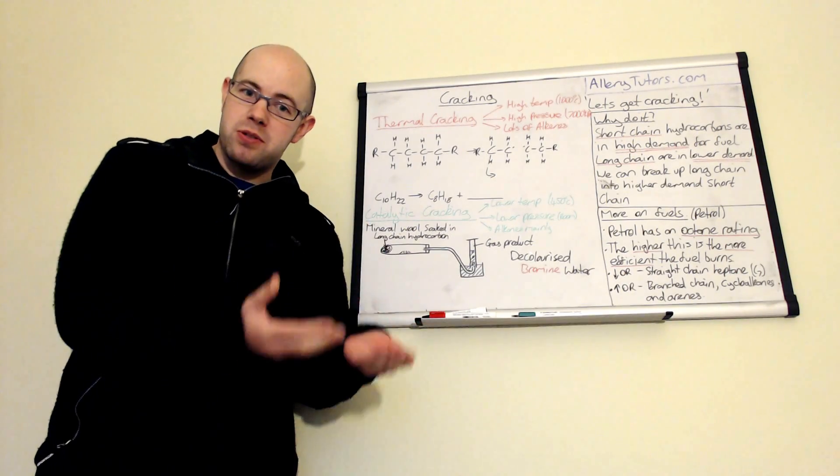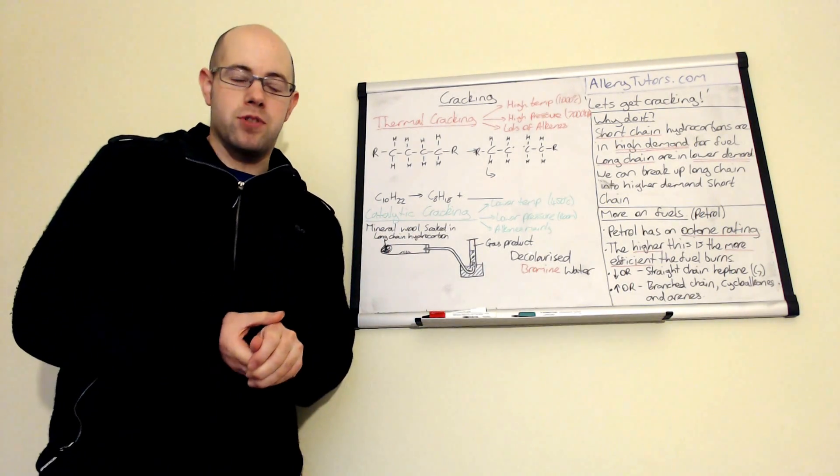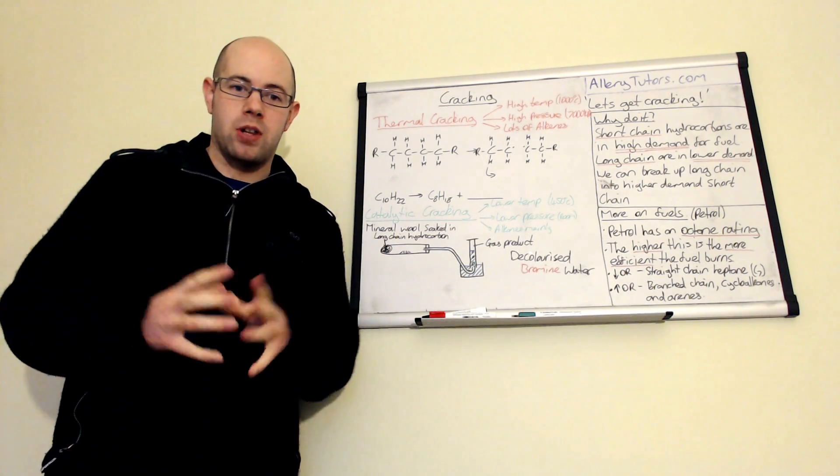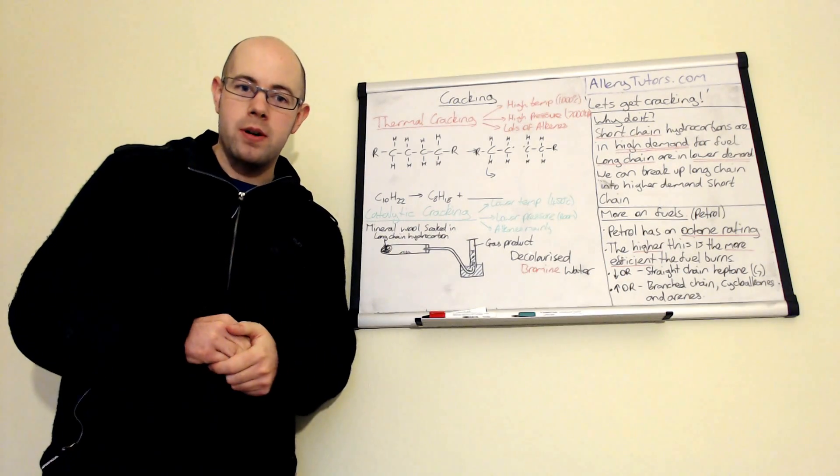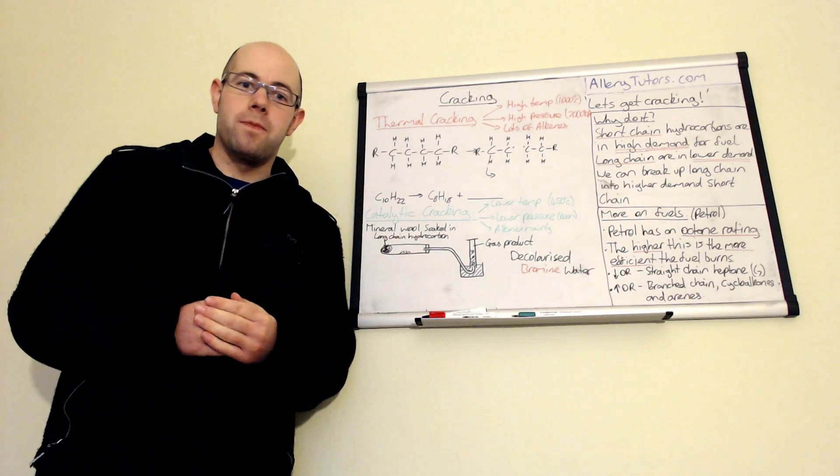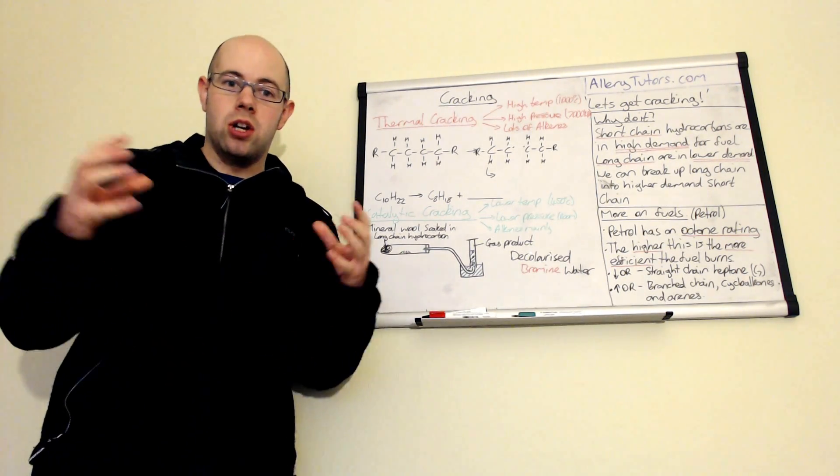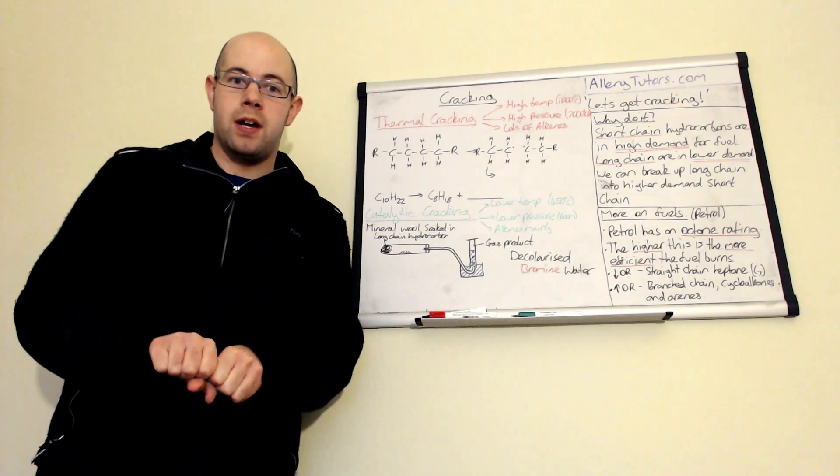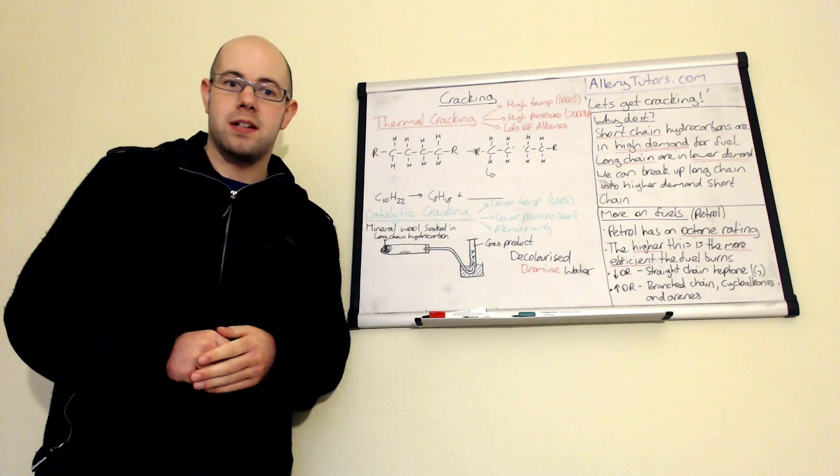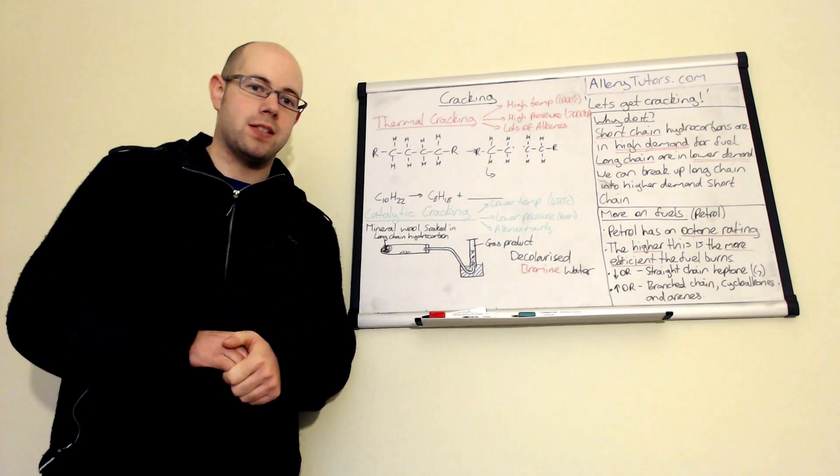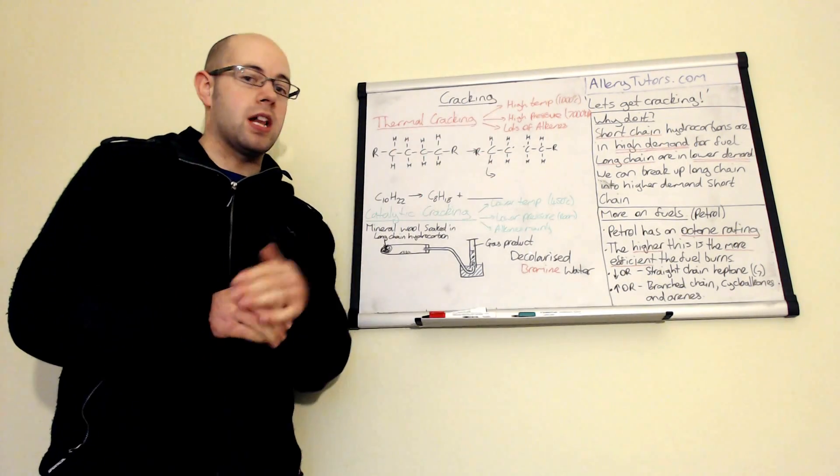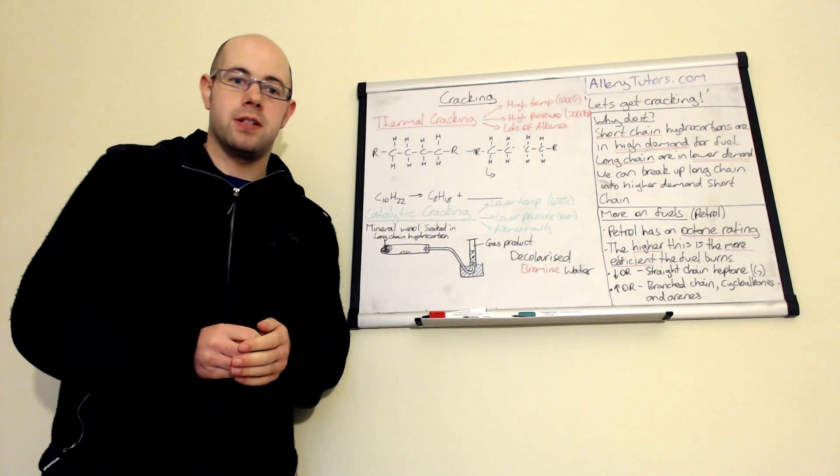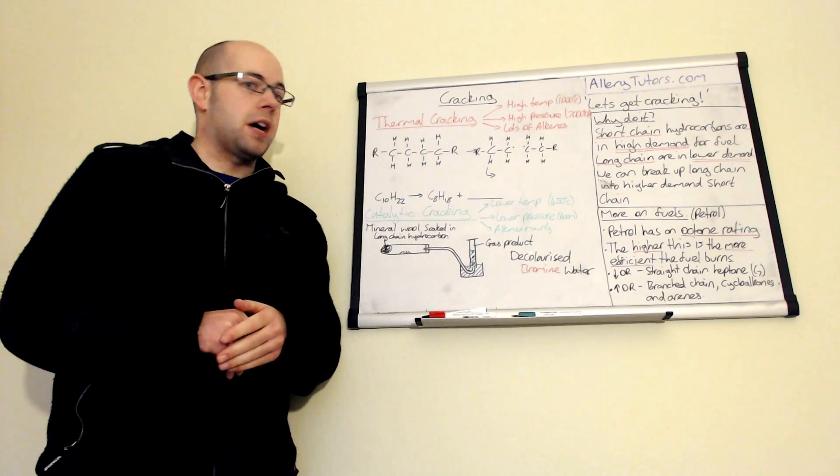When you dig out crude oil there's no certainty of how much of each fraction you're going to get. Quite often you might get a large amount of long chain hydrocarbons that are in lower demand. So we take our long chain hydrocarbons and crack them, which means breaking them into smaller parts which are in higher demand. This allows you to make use of nearly every part of the crude oil without wasting anything.